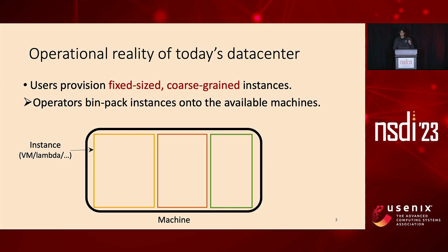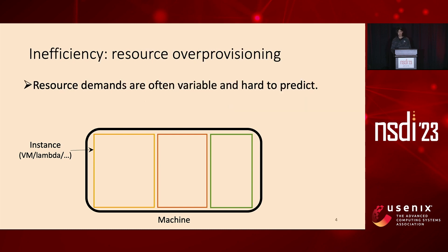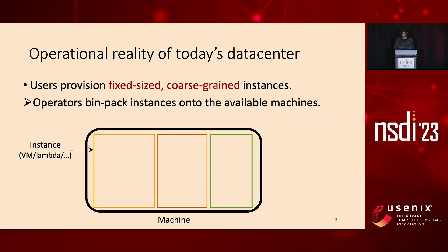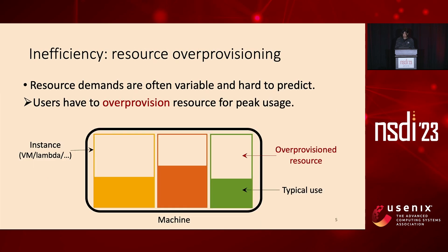With these instance provisioning requests, data center operators bin-pack those instances onto available physical servers to fulfill the resource demand. We use a black rectangle to represent the physical machine and colorful boxes to represent provisioned instances. Unfortunately, this long-established paradigm can seriously impact data center resource efficiency. The resource demand of cloud applications is often variable and hard to predict. To ensure service-level agreements, users always need to over-provision resources for an application's peak usage, causing substantial resources to be underutilized.